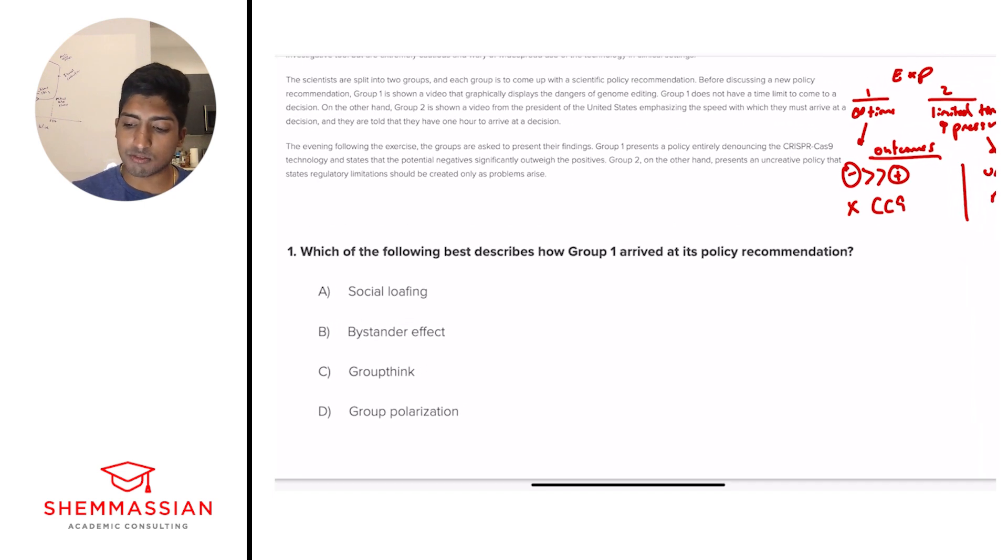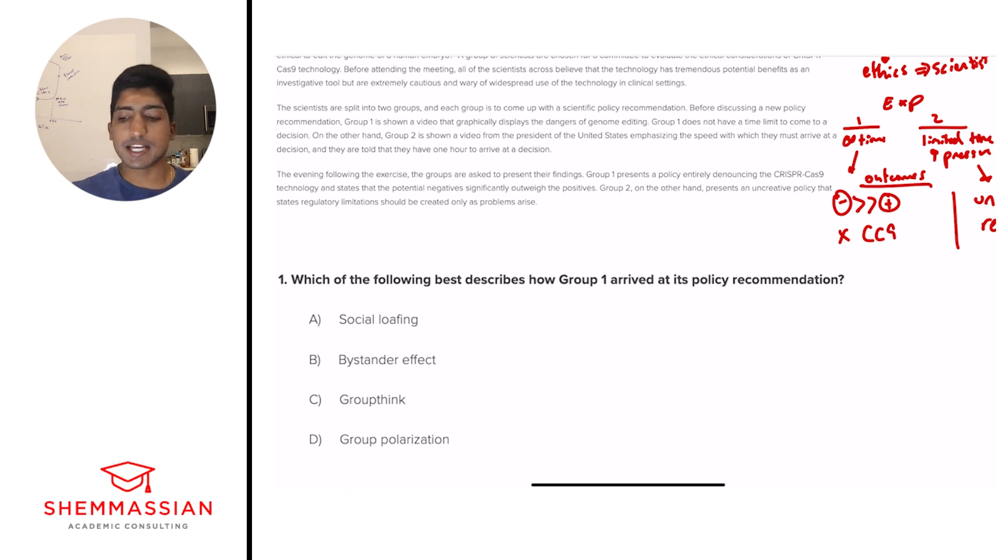So group one is arriving at his policy recommendation with infinite time, low stress, and then they come to it, negative being much, much greater than positive. If group one is coming to a conclusion that is significantly more negative than positive, when all the scientists believe that technology has tremendous potential benefits as an investigative tool, but are extremely cautious and wary of widespread use, that's like the precursor. They start all as these wary and cautious people, but they believe it has a lot of powers. But then group one presents a policy entirely denouncing. So we have a transition from good plus bad to bad. That's the big transition that's occurring.